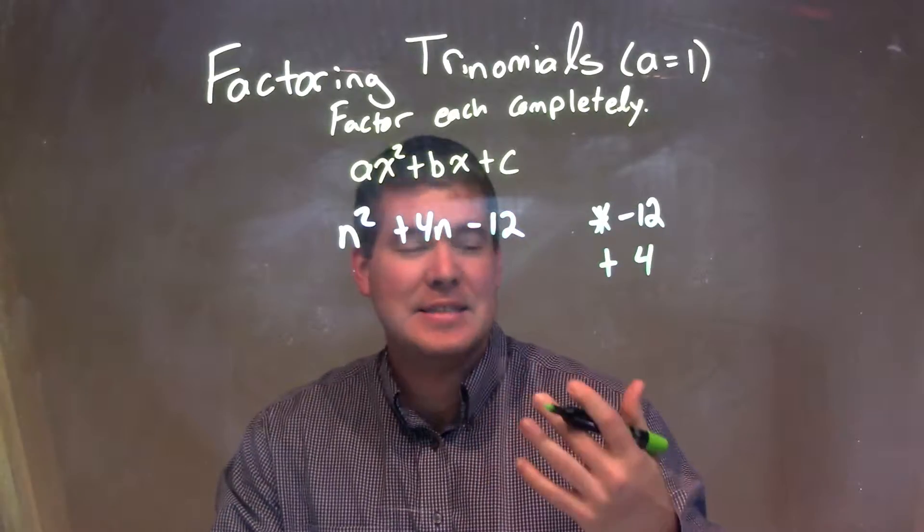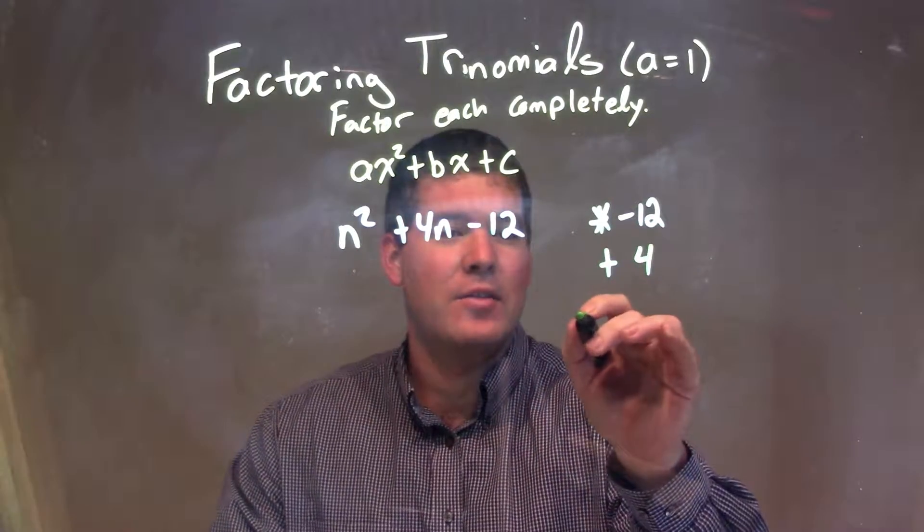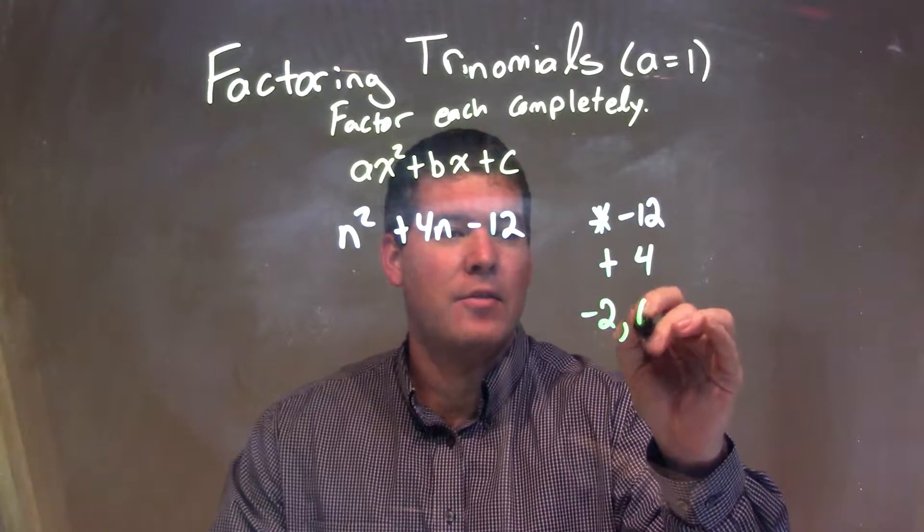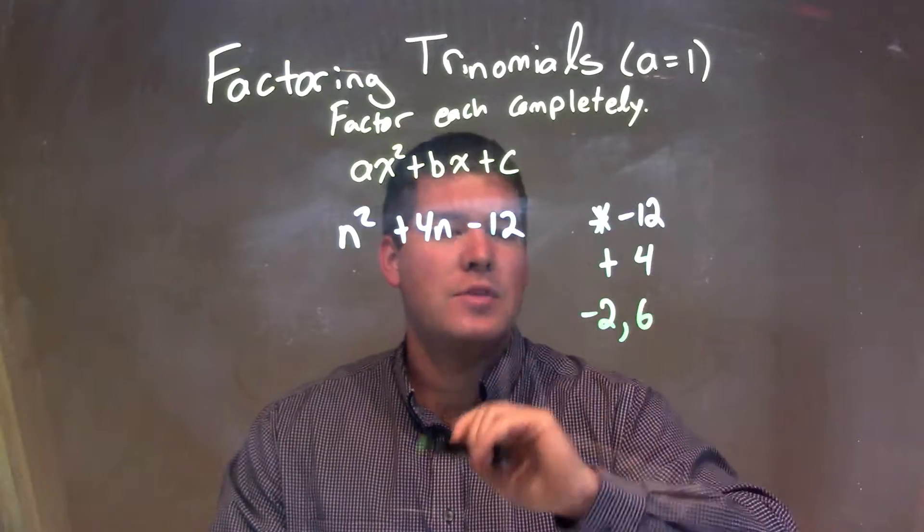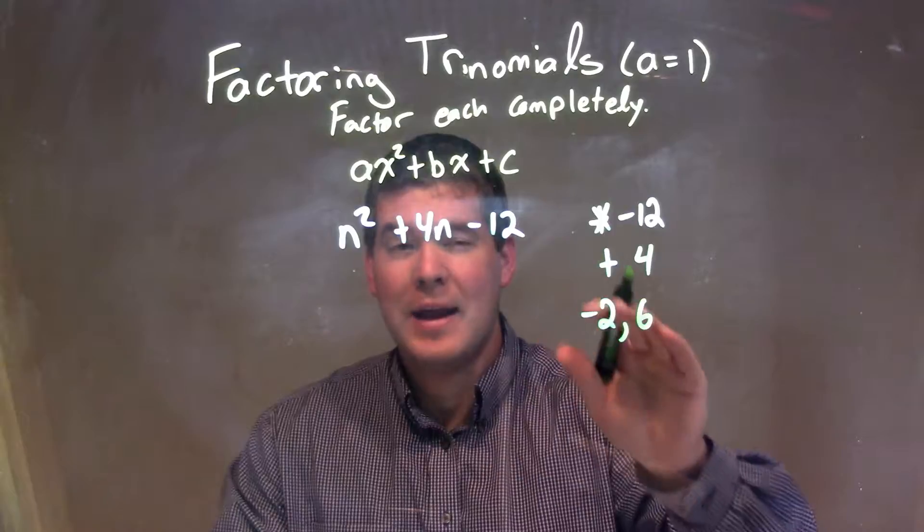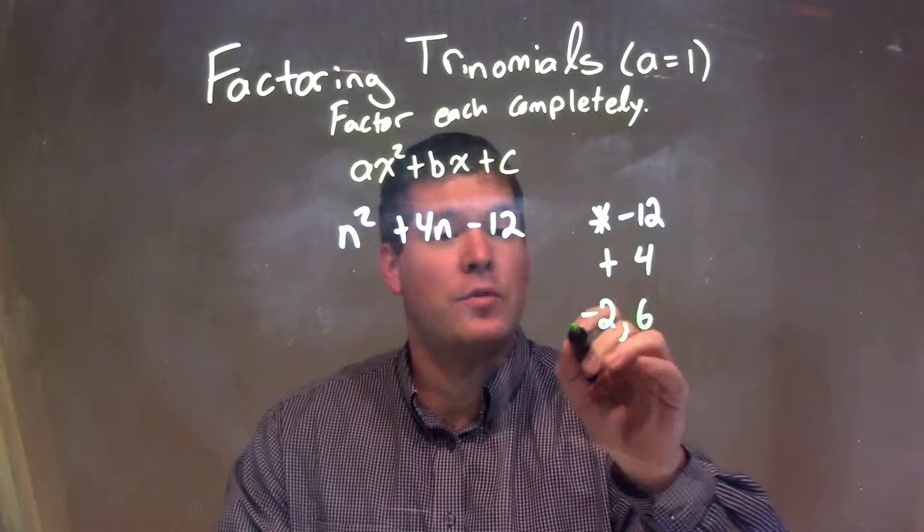The way I see it is -2 and +6. -2 times 6 is -12, but when I add them together, I get a positive 4.